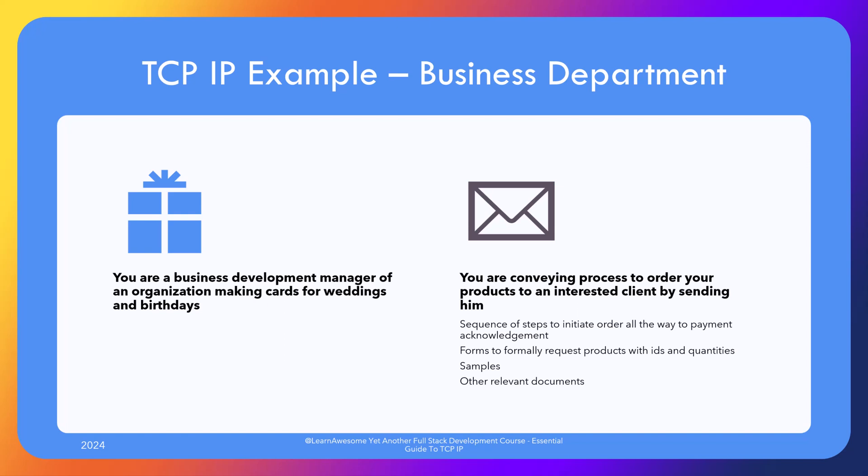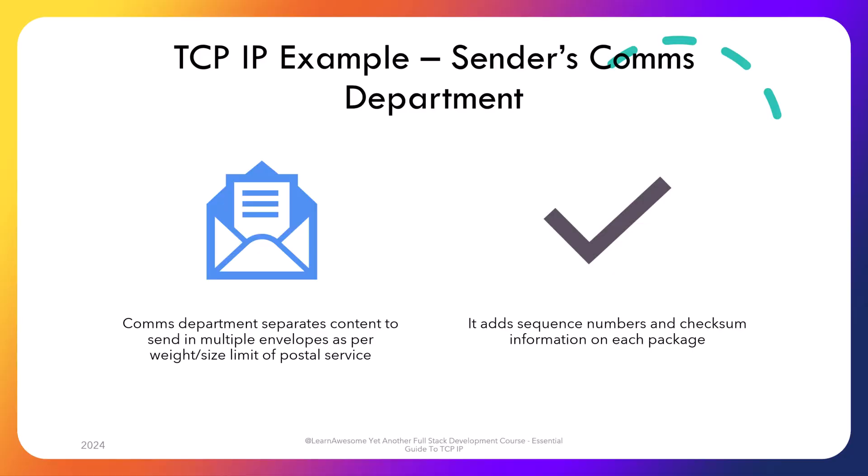You hand over the letter, forms, and samples to your staff and attend the next matter on your plate. Your staff realizes the amount of stuff you're trying to send is too big to fit in the standard size envelope of the post office. So it breaks the paperwork down into multiple standard size envelopes and adds a sequence number and a sum of the number of characters in the letter in each envelope — in case the client wants to ensure no paper is missing or tampered with during travel. This is called a checksum in technical terms.